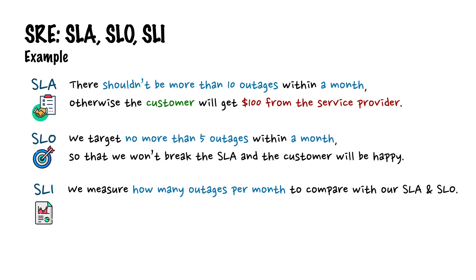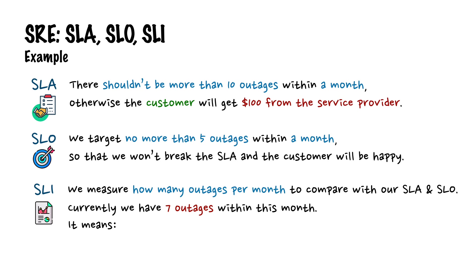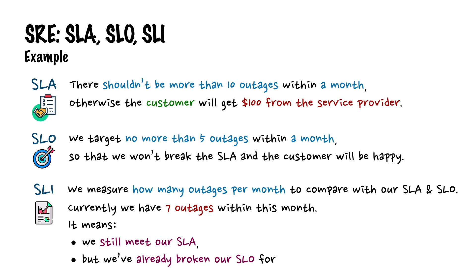So in the case where we currently have 7 outages within this month, it means we still meet our SLA because 7 is still lower than 10. But we've already broken our SLO for this month because we have 7 outages, which is already more than the 5 outages we set as our target.